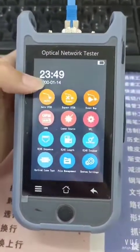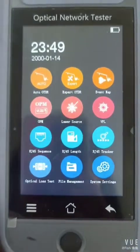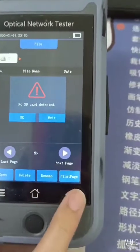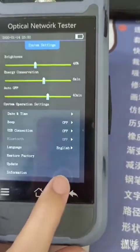This is the home page of the OTDR. You can see all the functions of it. This is the file management and this is system settings.